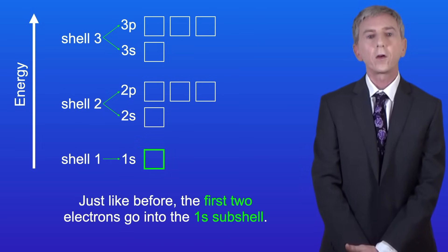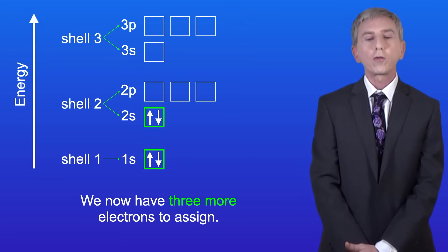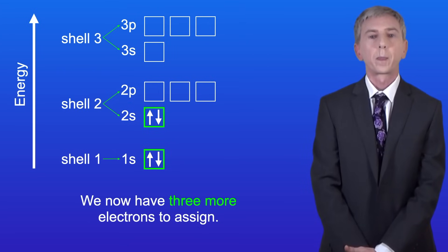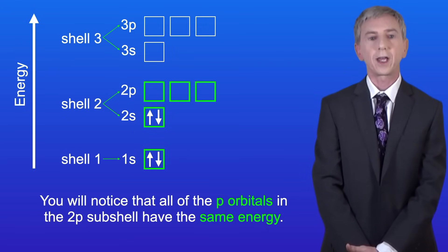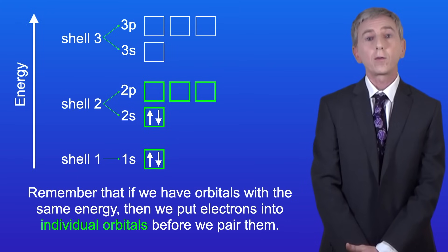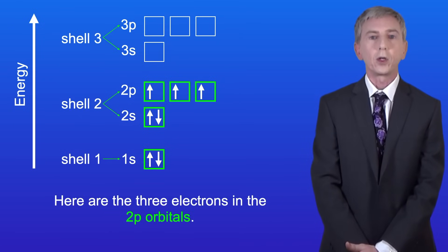Okay, so just like before, the first two electrons go into the 1s subshell, and here they are. The next two electrons go into the 2s subshell. We now have three more electrons to assign. Now you'll notice that all of the p orbitals in the 2p subshell have the same energy. Remember that if we've got orbitals with the same energy, then we put electrons into individual orbitals before we pair them. So here are our three electrons in the 2p orbitals.